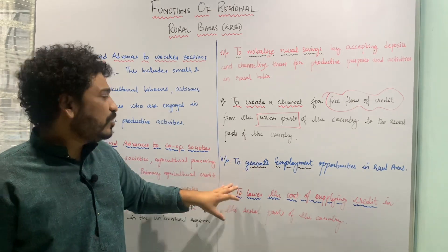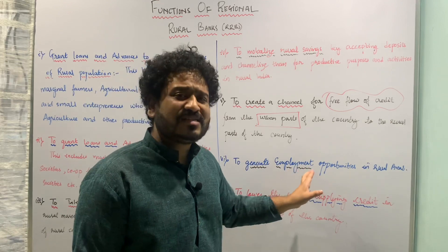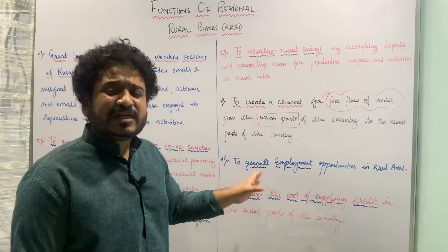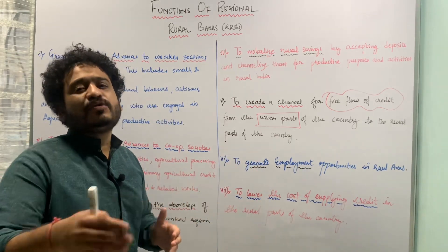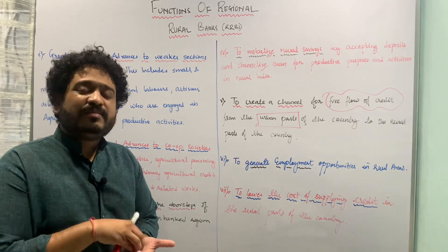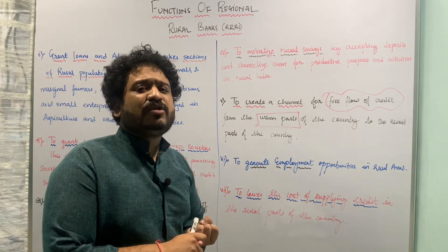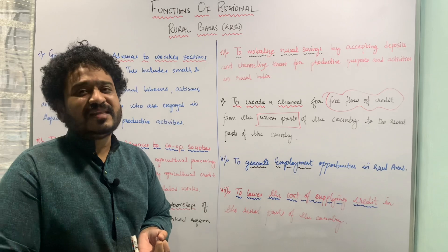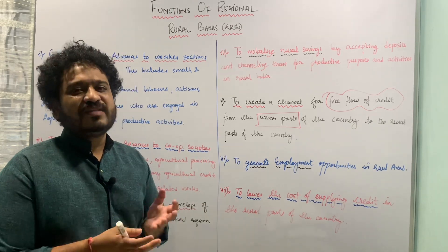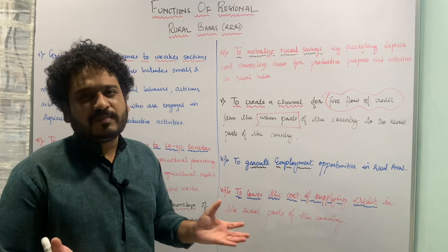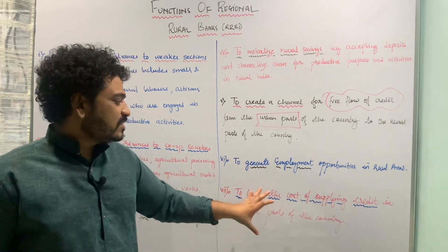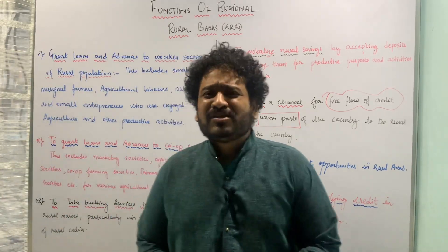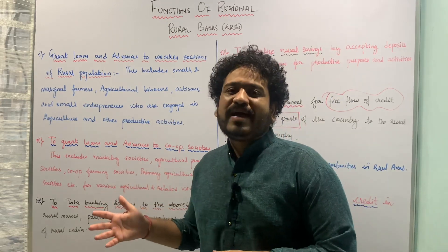The last function of regional rural banks in the Indian context is ensuring that the cost of supplying credit to rural areas goes down. This means credit is cheap in terms of the rate of interest charged, and it comes from an institutional or formal source. As a result, the cost of supplying credit to the rural populace goes down.